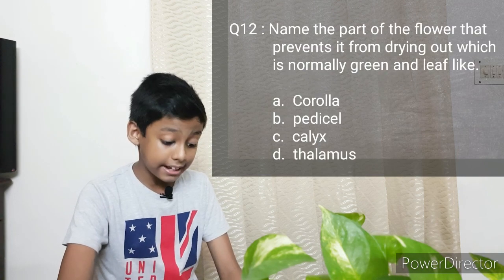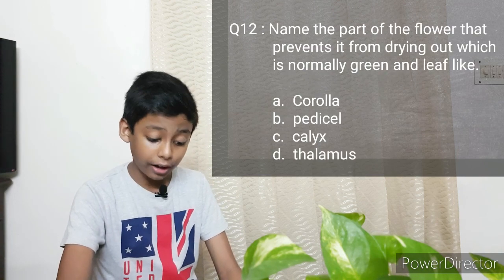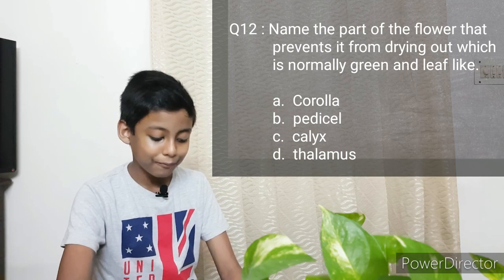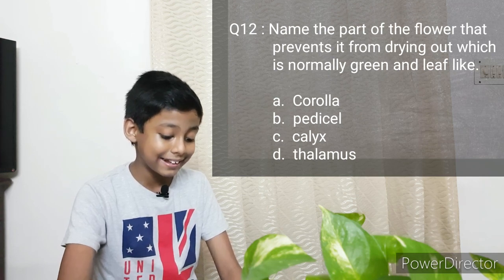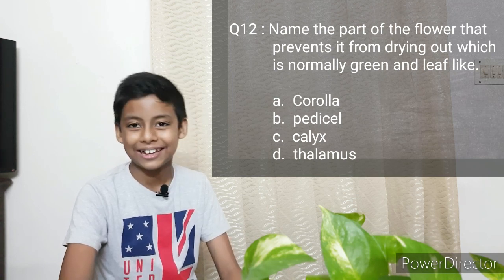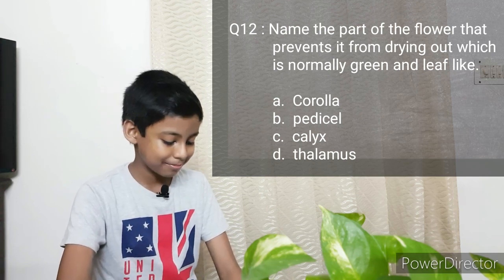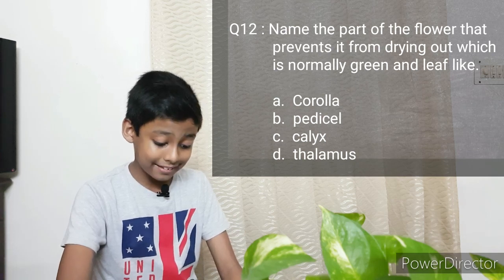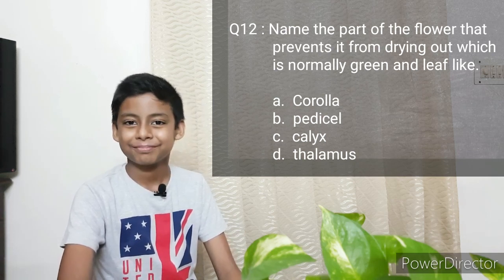The twelfth question: Name the part of the flower that prevents it from drying out, which is normally green and leaf-like. Options: Corolla, Pedicel, Calyx, Thalamus. The answer is Calyx.